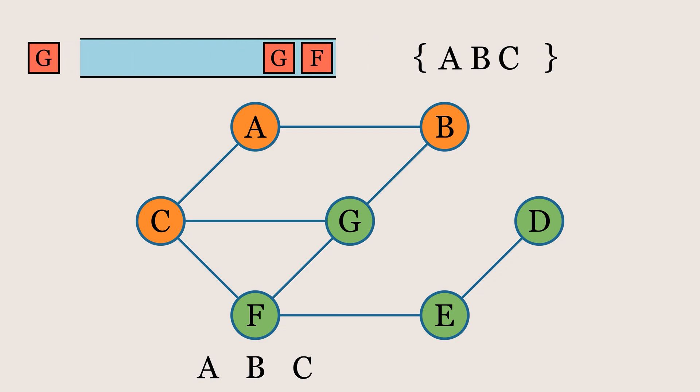Next, we pop element G from the queue, add it to the visited set, print it, and then insert its unvisited neighbor into the queue.